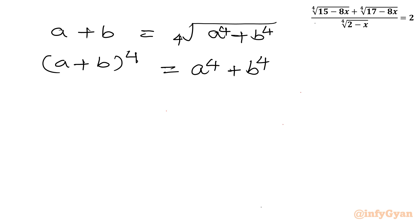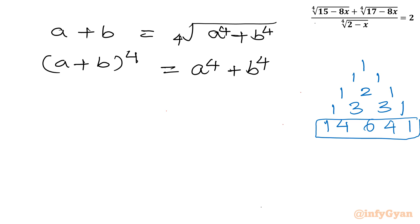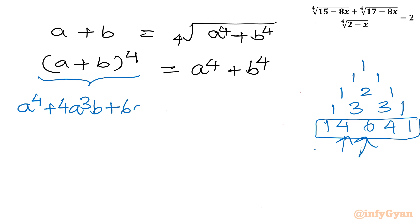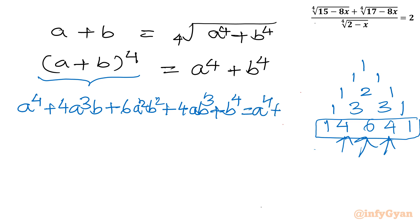Now the expansion will come — Pascal's triangle will be used for coefficients at power 4. For power 2 it is 1, 2, 1; for power 3 it is 1, 3, 3, 1; and for power 4, which we need, it is 1, 4, 6, 4, 1. Now expanding the left-hand side: a⁴ plus 4a³b plus 6a²b² plus 4ab³ plus b⁴, and the right-hand side is a⁴ plus b⁴.